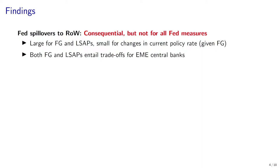When I say consequential, I also mean beyond the size of spillovers — also the challenges they imply for central banks in emerging market economies. We find that both forward guidance and LSAPs entail trade-offs for monetary policy in emerging market economies, in part between stabilizing output and prices, but also between stabilizing the macroeconomy on the one hand and preserving financial stability on the other hand.